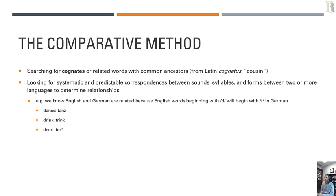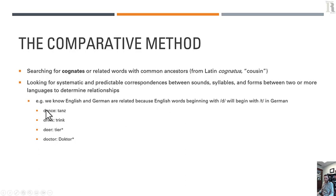In English we have 'doctor,' and in German it's also 'Doktor' — wait, this doesn't follow the systematic and predictable correspondence. Here we hit one of the limits of the comparative method: languages are not isolated from each other; they borrow words. When they borrow words, those words won't undergo the systematic sound changes that produced the difference between 'dance' and 'Tanz' over hundreds and thousands of years. The word 'doctor' was borrowed by both English and German from Latin long after the sound change that produced those differences, putting noise into the comparative method.